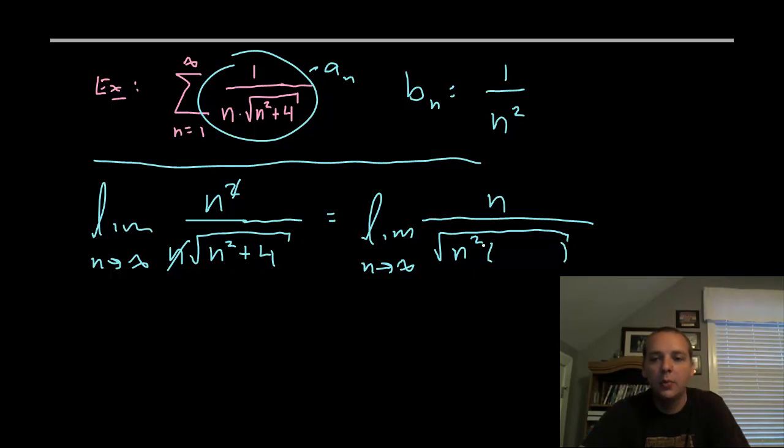And the reason I know that's true is you could go ahead and distribute it back through and you get n squared times one and n squared times four over n squared, so you'll be right back where you started. Now that I have multiplication instead of addition, we know that square roots can break, can split over multiplication. Okay, just so I don't have to write eight more lines, I'll just go ahead and do that here. Okay, so if you broke this apart, you'd have the square root of n squared and the square root of one plus four over n squared.